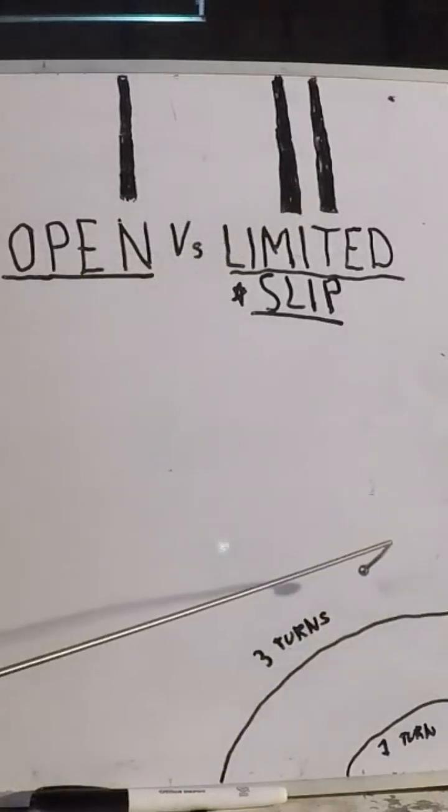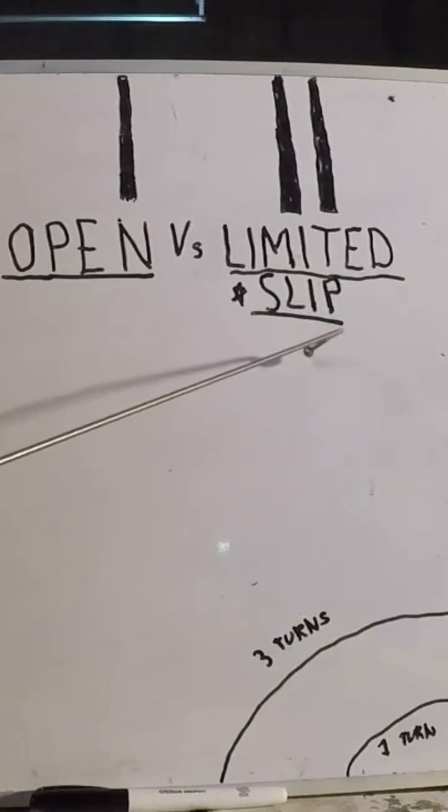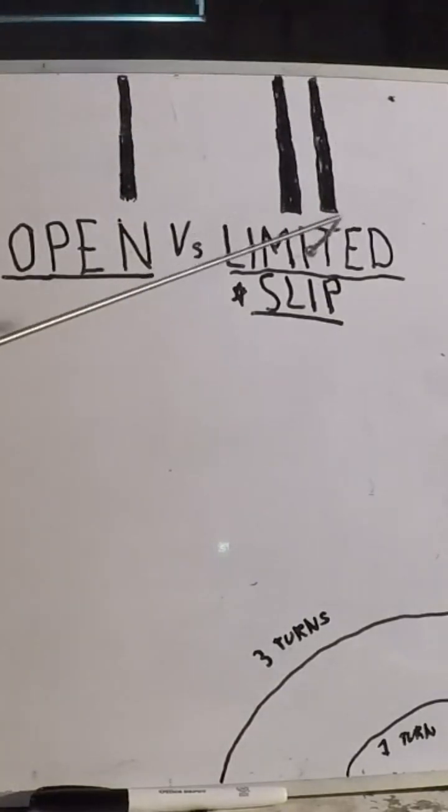With a limited slip, it can do the same thing as an open. If you're going around the corner and you're not putting a load against the differential, the spider gears inside here will turn just like the spider gears inside here, and I'll show you examples of that here in a minute.